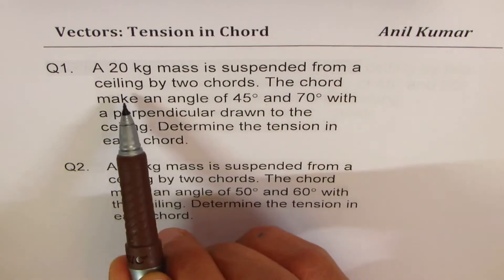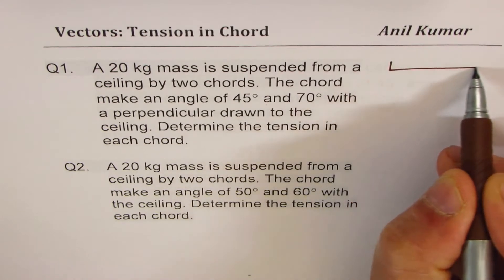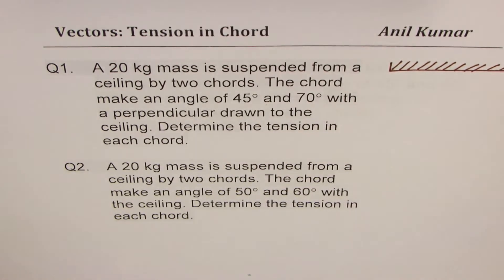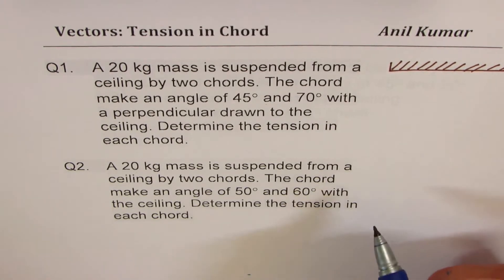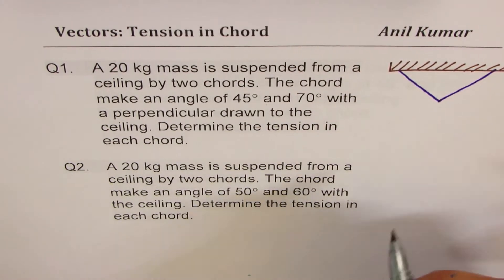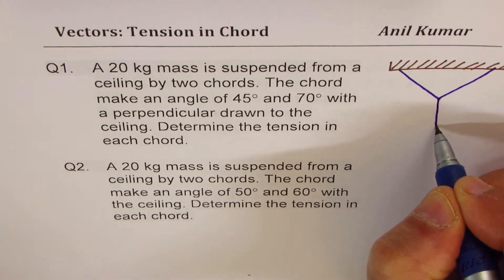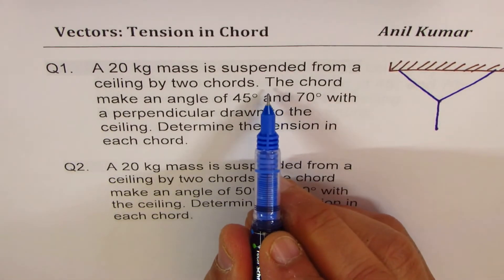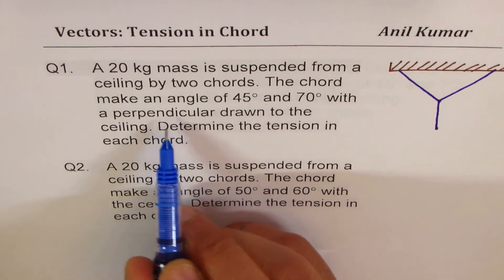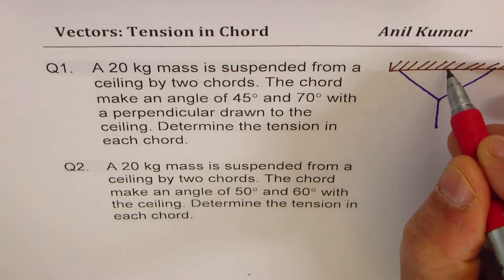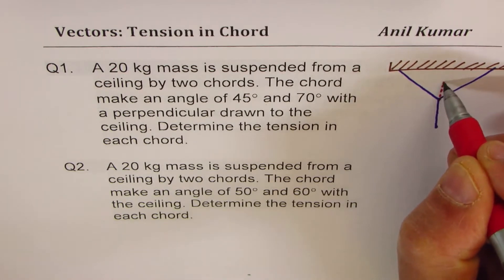A 20 kg mass is suspended from a ceiling by two cords. Let's say this is the ceiling. From this ceiling, we will attach two cords and then hang a mass. Now it says the cord makes an angle of 45 degrees and 70 degrees with the perpendicular drawn to the ceiling. Perpendicular means something vertical to the ceiling, so we'll draw a line like this.